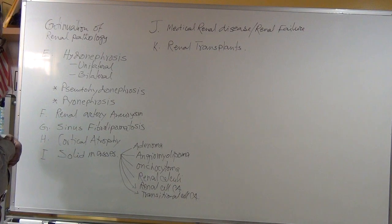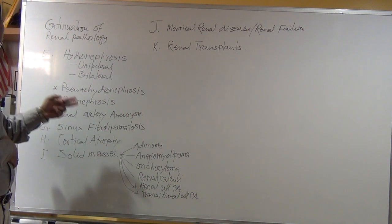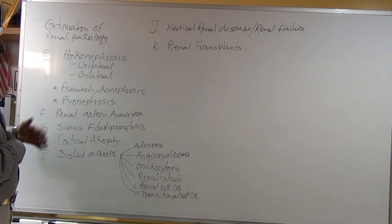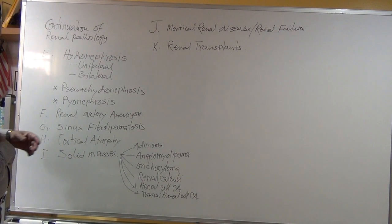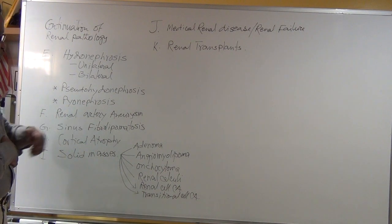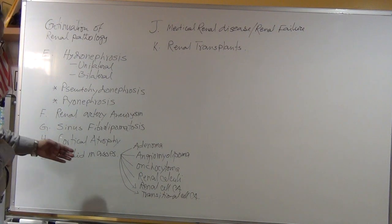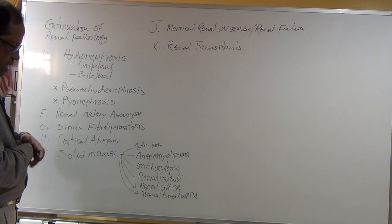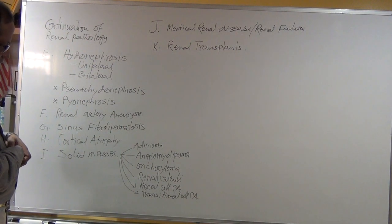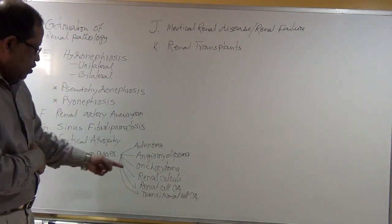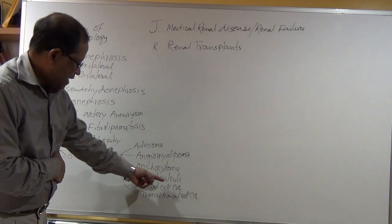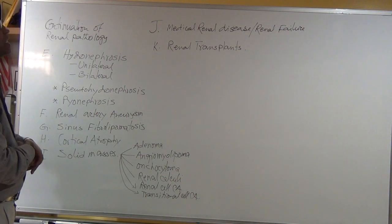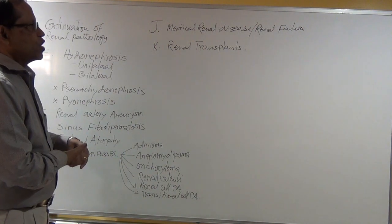We will discuss the renal artery aneurysm, renal artery occlusion, and renal artery stenosis and their effects on the kidney. Then we will discuss sinus fibrolipomatosis, cortical atrophy, and solid masses — some benign, some malignant — such as adenoma, angiomyolipoma, oncocytoma, renal calculi, renal cell carcinoma, and transitional cell carcinoma.